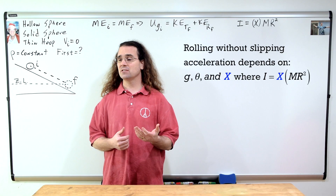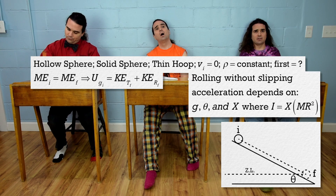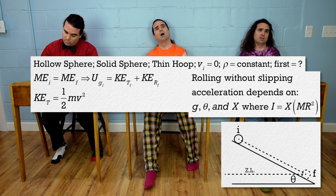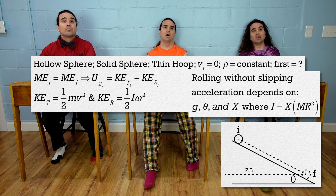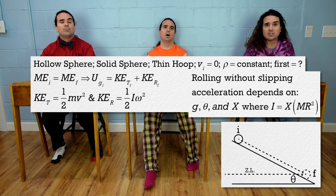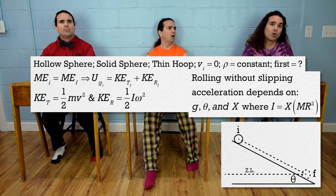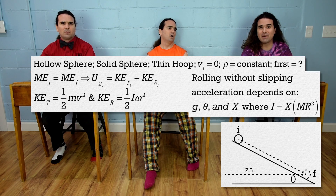Bo, what are the equations for translational and rotational kinetic energies? Translational kinetic energy equals one-half mass times velocity squared, and rotational kinetic energy equals one-half rotational inertia times angular velocity squared. So, the lower the fraction for the rotational inertia equation, the lower the percentage of the initial gravitational potential energy which will be converted to rotational kinetic energy final, the more energy will be left for translational kinetic energy final, the faster the object will be going.